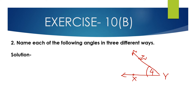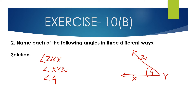The angle is formed by rays YZ and YX. So the angle formed from these 2 rays, YZ and YX, can be named as angle ZYX, angle XYZ, and angle 4. These are the 3 different ways to name this angle.